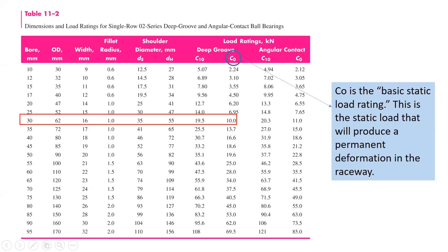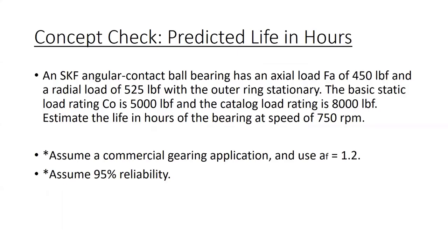One more thing I want to say about the basic static load rating. It's the static load that will produce a permanent deformation in the raceway. And again, we see that it's going to be less than the catalog load rating. So for the quiz, one of the series of questions you'll have is this concept check, predicted life in hours. You'll have an SKF angular contact ball bearing with an axial load of 450 pounds and a radial load of 525 with the outer ring stationary. The basic static load rating C knot is 5,000 pounds, and the catalog load rating is 8,000 pounds. So we're going to estimate the life in hours of the bearing at a speed of 750 RPM. Use an application factor of 1.2 right in the middle for commercial gearing and assume 95% reliability.